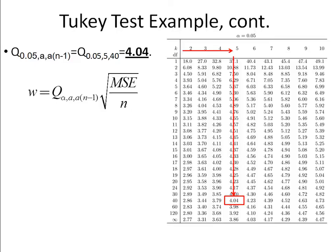So, then we plug that into this equation for W, and we already know what the mean squared error is from the ANOVA table. It was 0.088 and our N, in this case, is 9. So, we can then calculate W, and we get a value of 0.4.